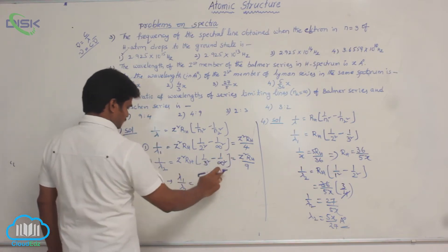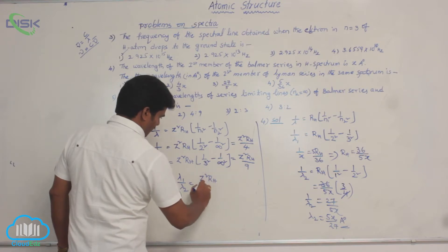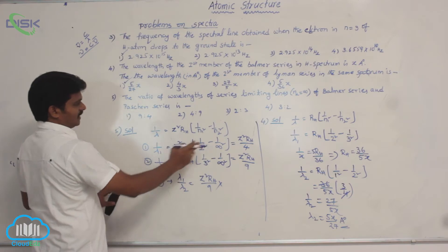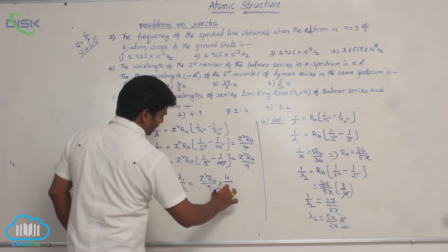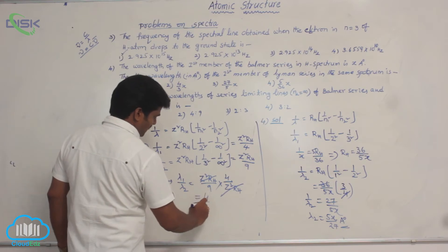Now, the value in second one, Z square RH by 9, and actually divided by this one. That means 4 goes to numerator, whereas Z square RH goes to denominator. So these two get cancelled. Then 4 by 9 is left.